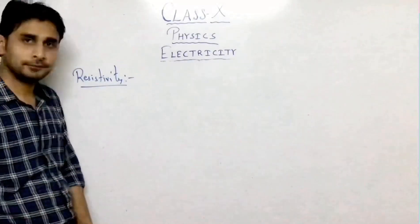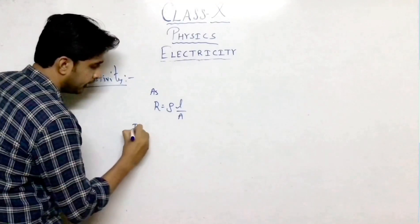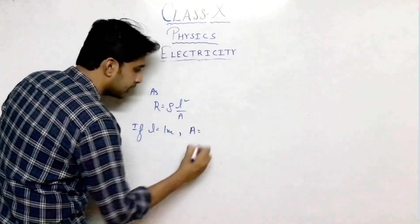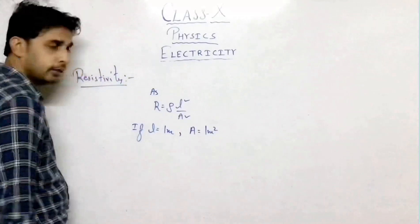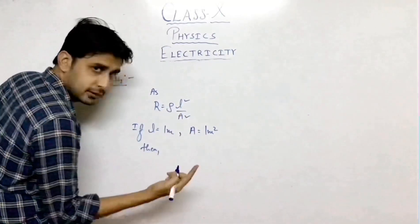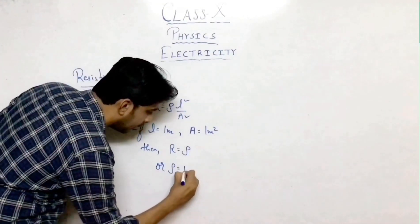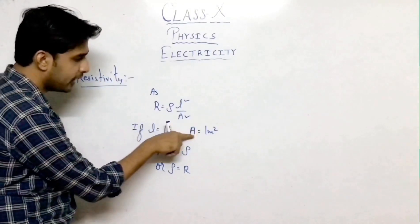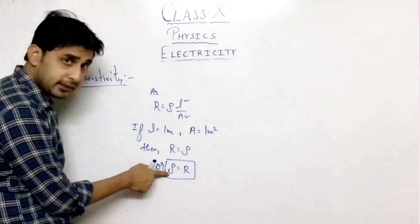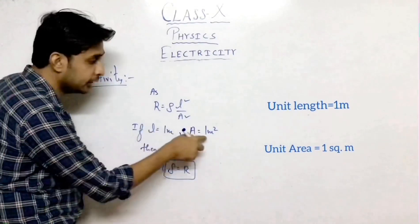We will now define resistivity using R = ρL/A. If the length of the conductor is 1 metre and the area of cross section of the conductor is 1 metre square, then substituting these values gives 1/1 = 1, so R will be equal to ρ. Or ρ will be equal to R, only if length is 1 metre and area is 1 metre square. So resistivity of the material of the conductor is numerically equal to the resistance of the conductor of unit length and unit area of cross section.